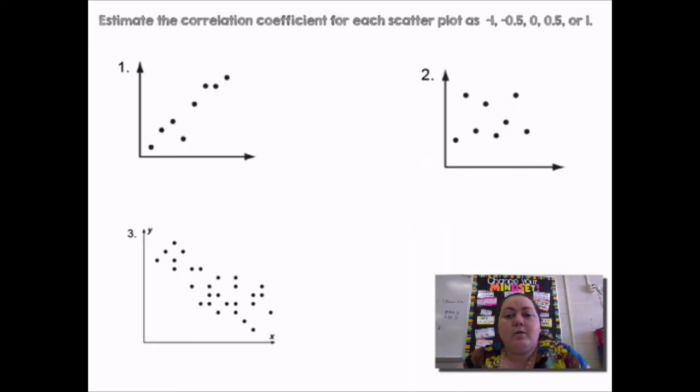So estimate the correlation coefficient for each scatter plot as close to negative 1, negative 0.5, 0, positive 0.5, or 1. If I look at the first one, it's almost in a perfect line. I have that one point kind of making it not perfect, but it's not that scattered. It's pretty close together. So I would say that one has a correlation coefficient R, which is approximately 1. So my correlation coefficient for the first one is close to 1.